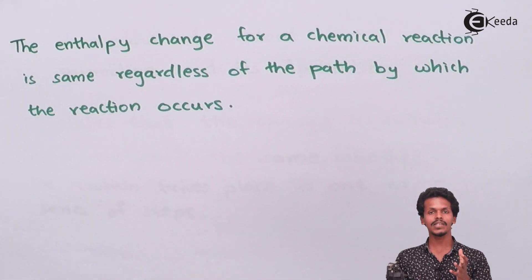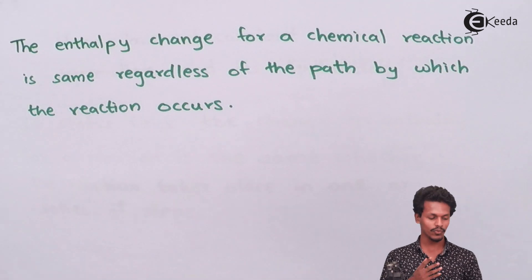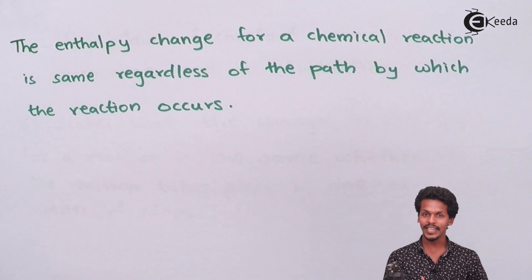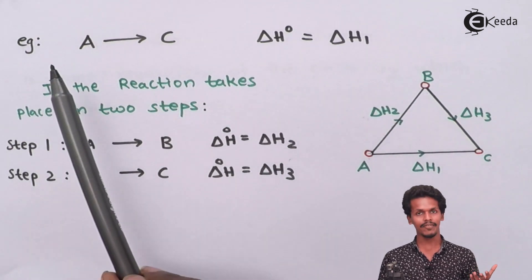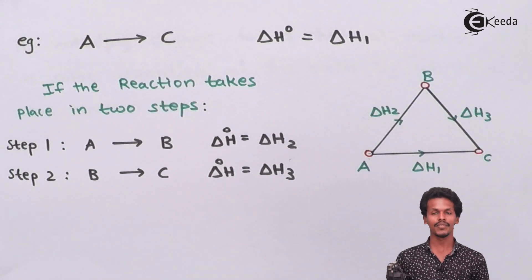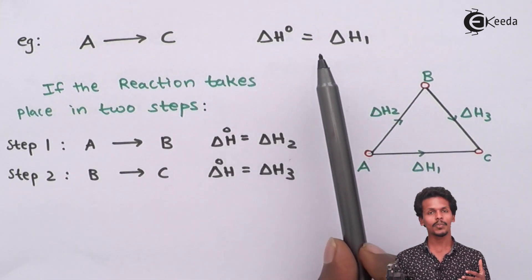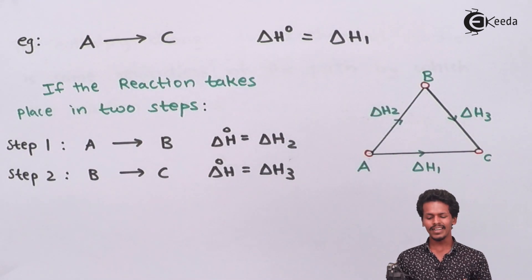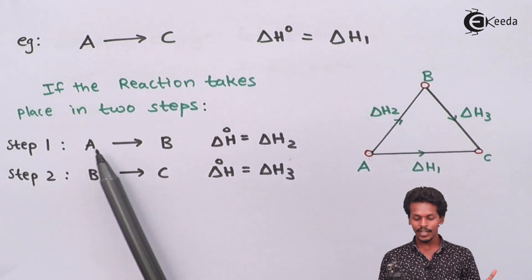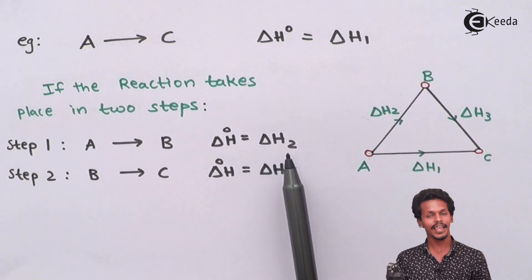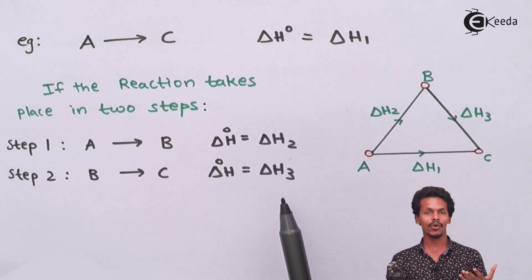Let us understand what Hess Law conveys about the heat of a reaction. Suppose we have a reaction A to C where the change in enthalpy is delta H1. This reaction can also be written in a series of steps: from A to B with enthalpy change delta H2, and then from B to C with enthalpy change delta H3.